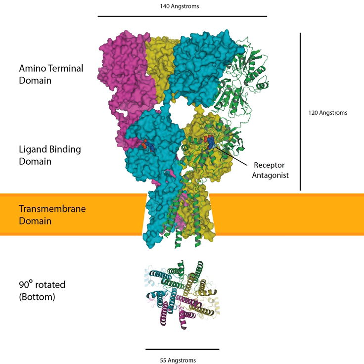The alpha-amino-3-hydroxy-5-methyl-4-isoxazolepropionic acid receptor, also known as AMPA receptor or quisqualate receptor, is an ionotropic transmembrane receptor for glutamate that mediates fast synaptic transmission in the central nervous system (CNS).